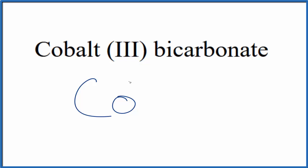And this Roman numeral III means that it's going to be 3+. Bicarbonate, you're not going to find that on the periodic table. That ends in A-T-E, so this is a polyatomic ion.